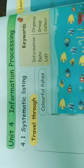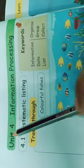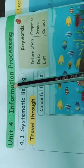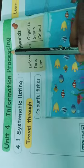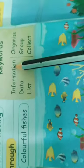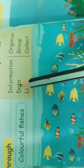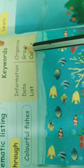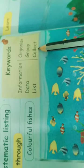Hi Kooties, today we are going to see about Unit 4 Information Processing. Keywords: Information, Data, List, Organize, Group, Collect.